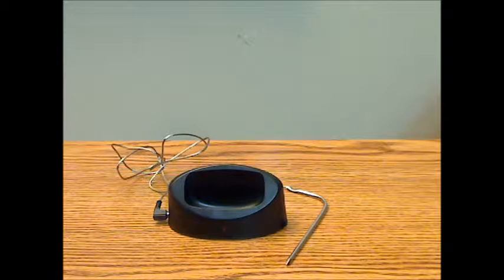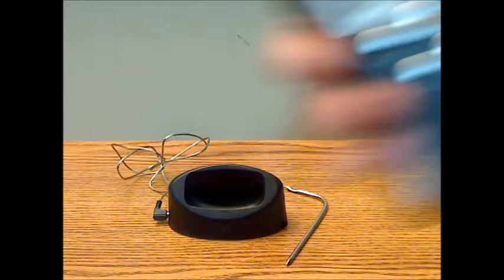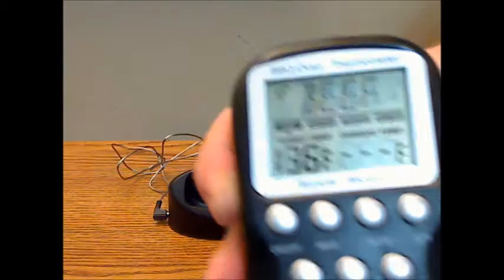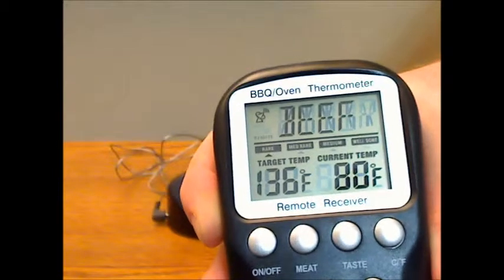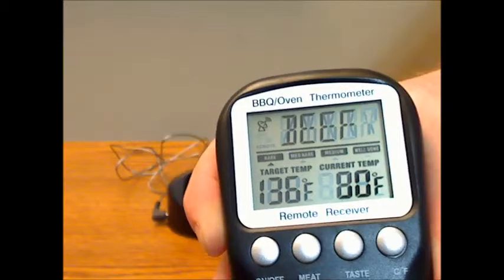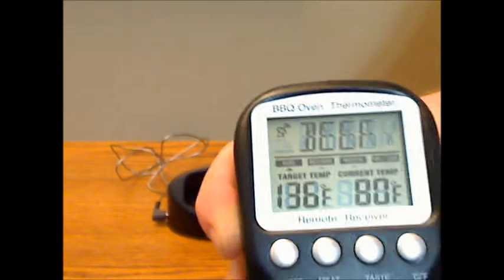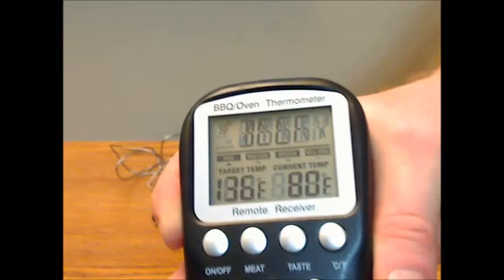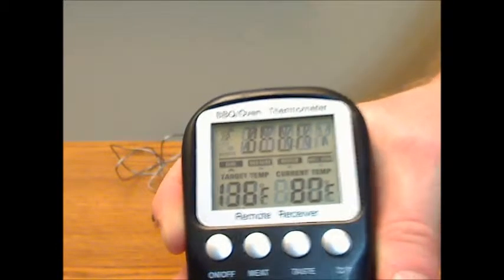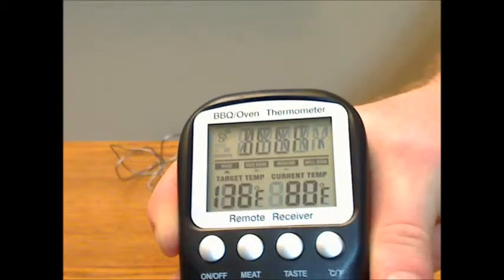So the thermometer itself has a nice large display that includes the meat selection, wellness level, target temperature, current temperature and then up here in the corner the transmitter indicator. There's no backlight on this, I would have liked to see that with this but I mean that's relatively minor for me but there is no backlight.